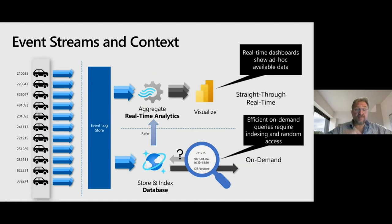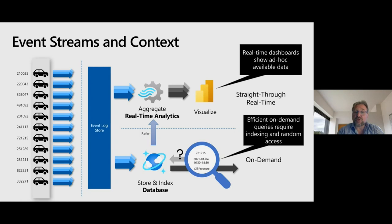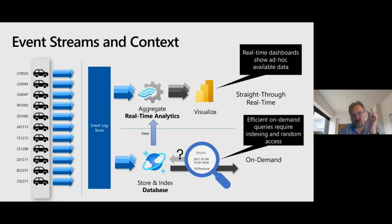Event log stores like Event Hubs are not necessarily the best long-term store because they only index along the time axis. Typically what you'll do is take those event streams and store them in a database — Cosmos DB or SQL in Azure, MySQL or DynamoDB on AWS. When you want to access those streams later, you go into that store, search by your criteria, and find those events serialized in an appropriate data structure.